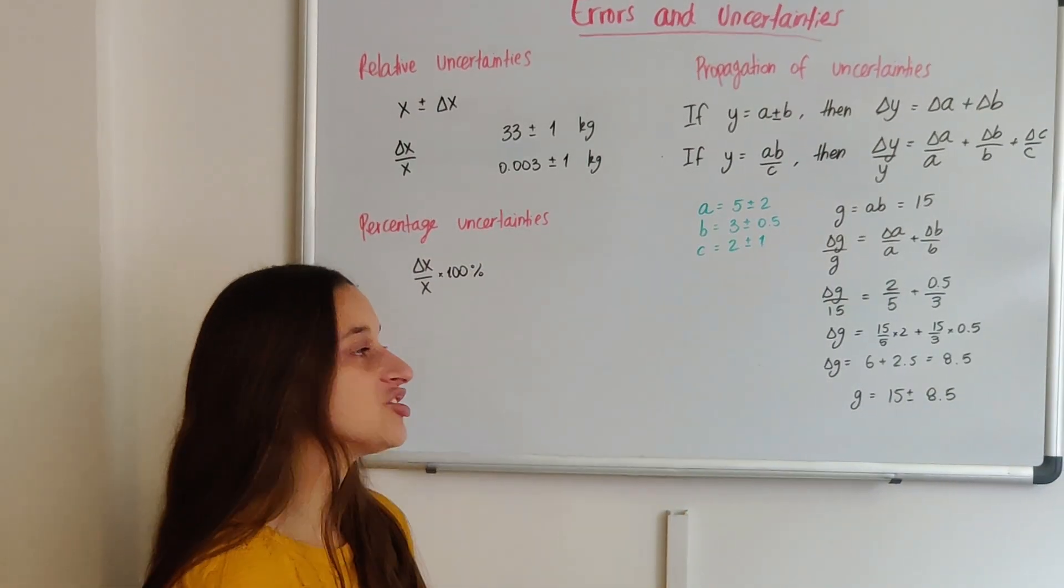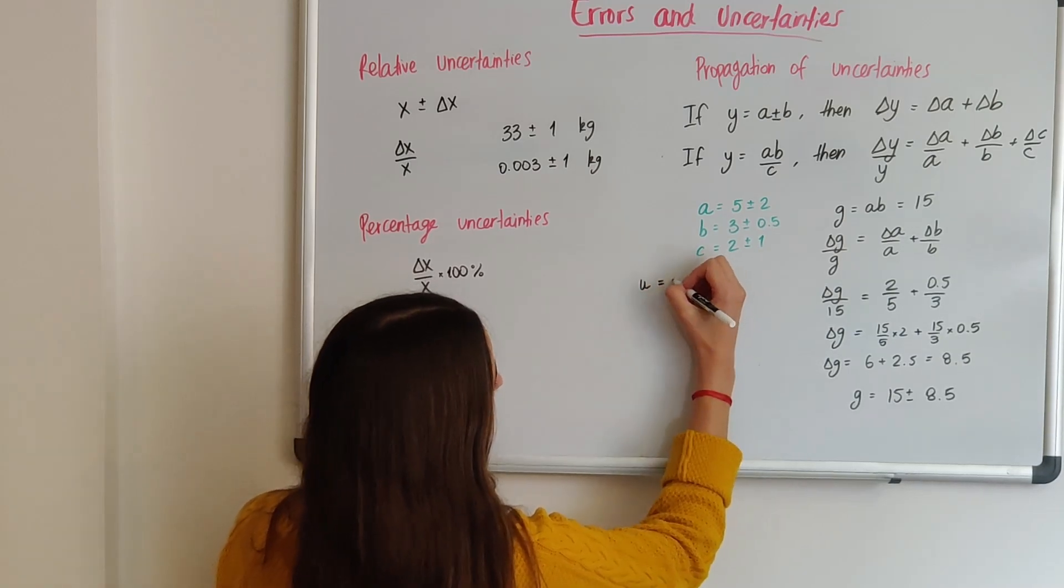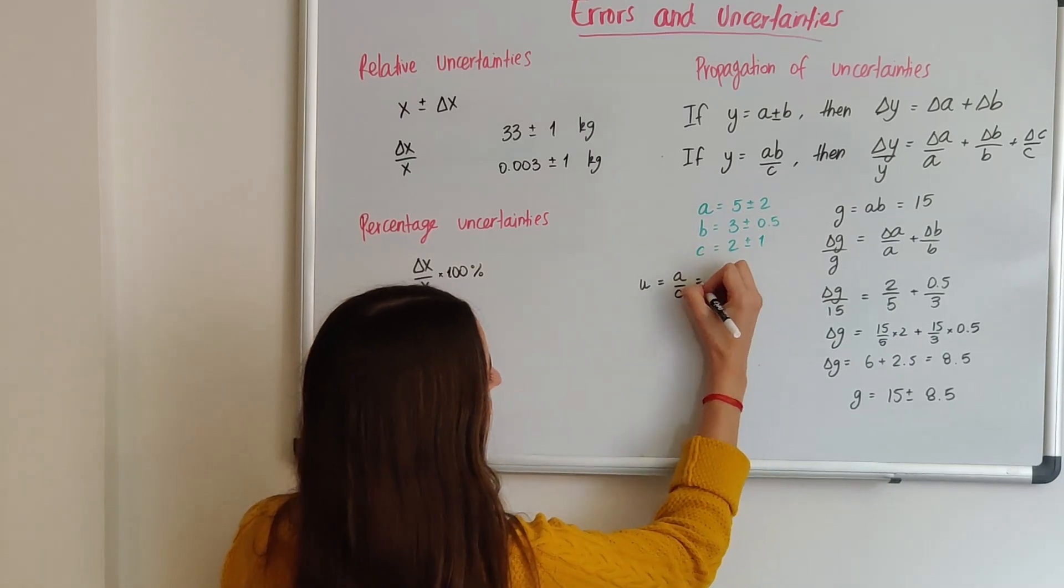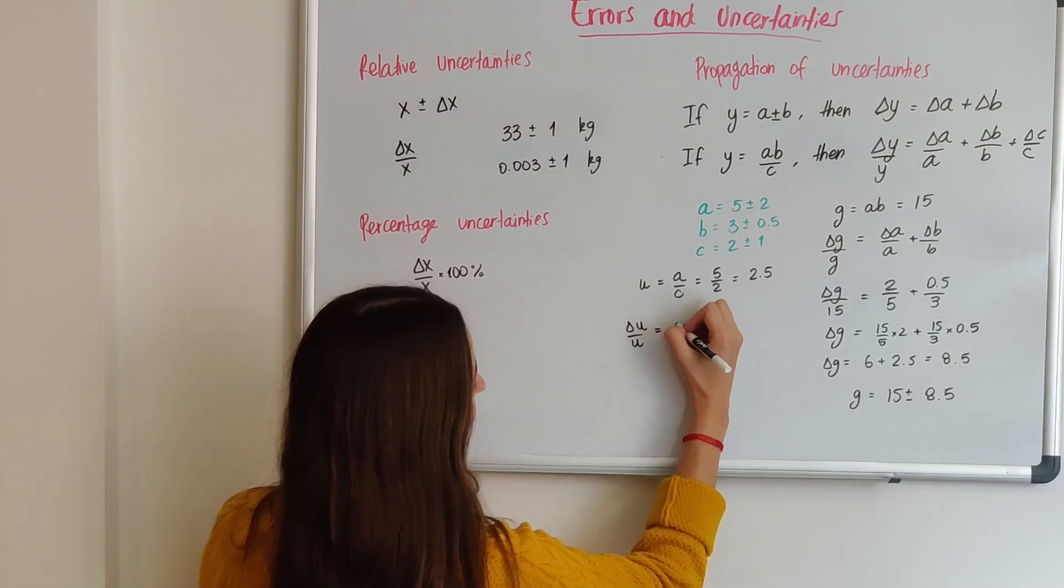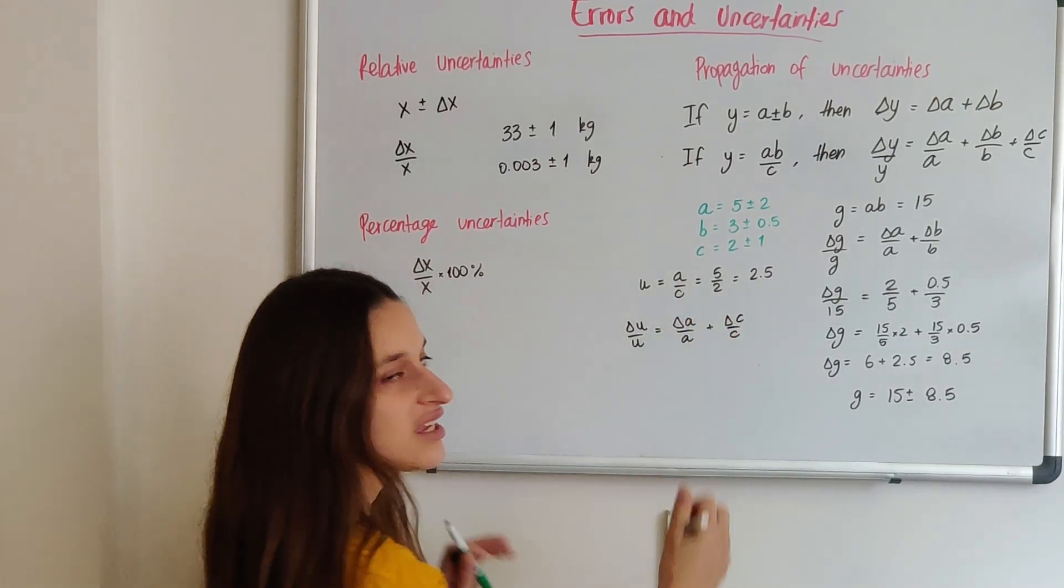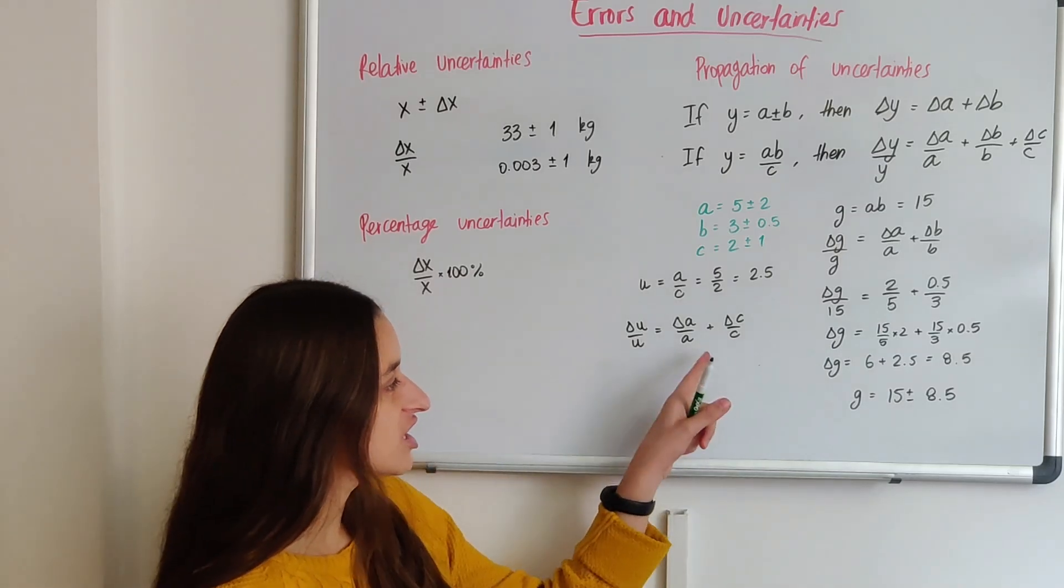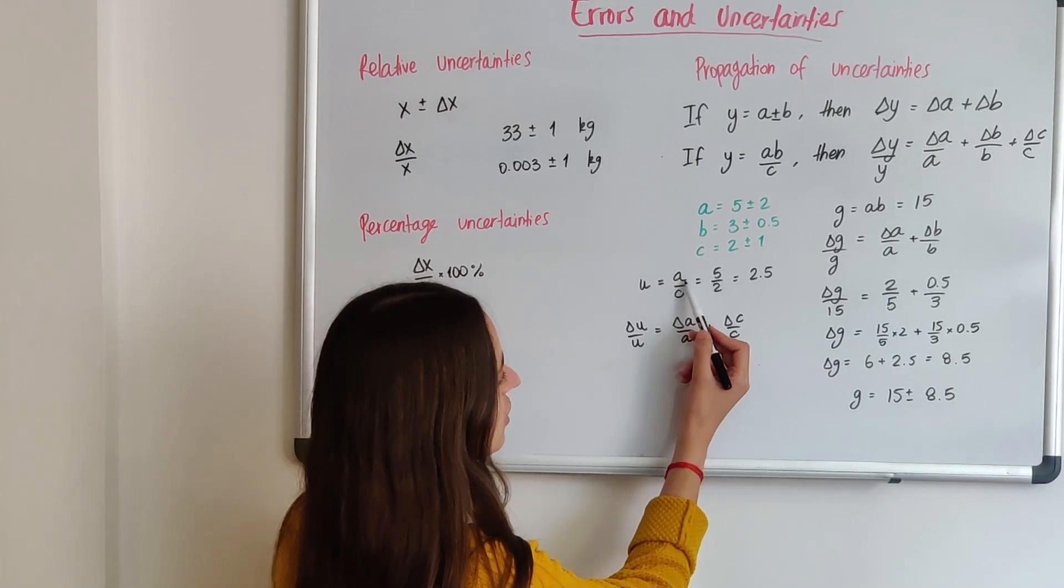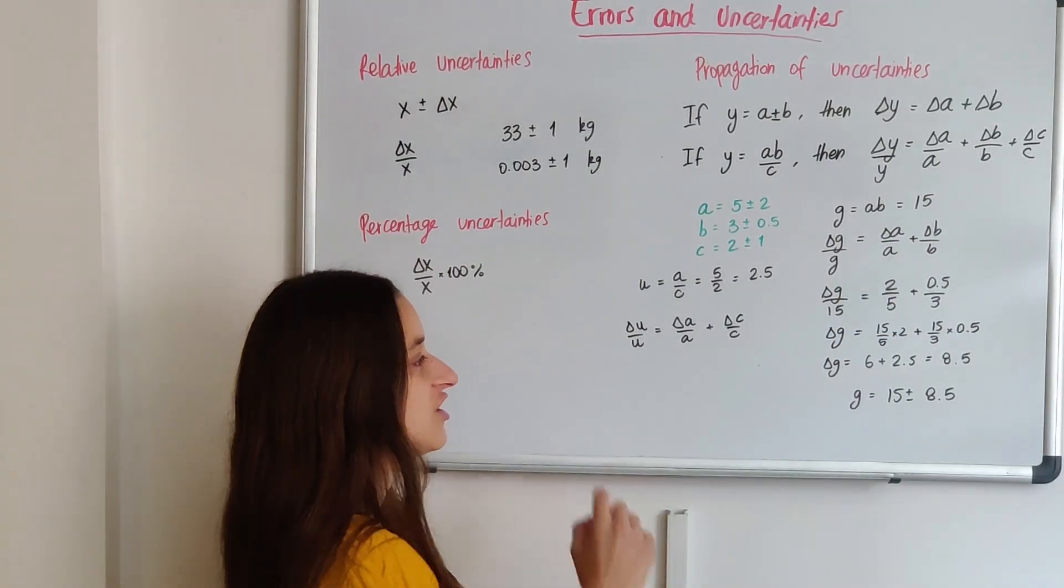That's if I only have a multiplication. What if I only have a division? So let's say I want to find another letter, which is u. And u is equal to a over c. So I know that a over c is 5 over 2, which is 2.5. But how do I know delta u? Well, delta u over u is equal to delta a over a plus delta c over c. Notice that even though it's division, I still always add. You never subtract the uncertainties.